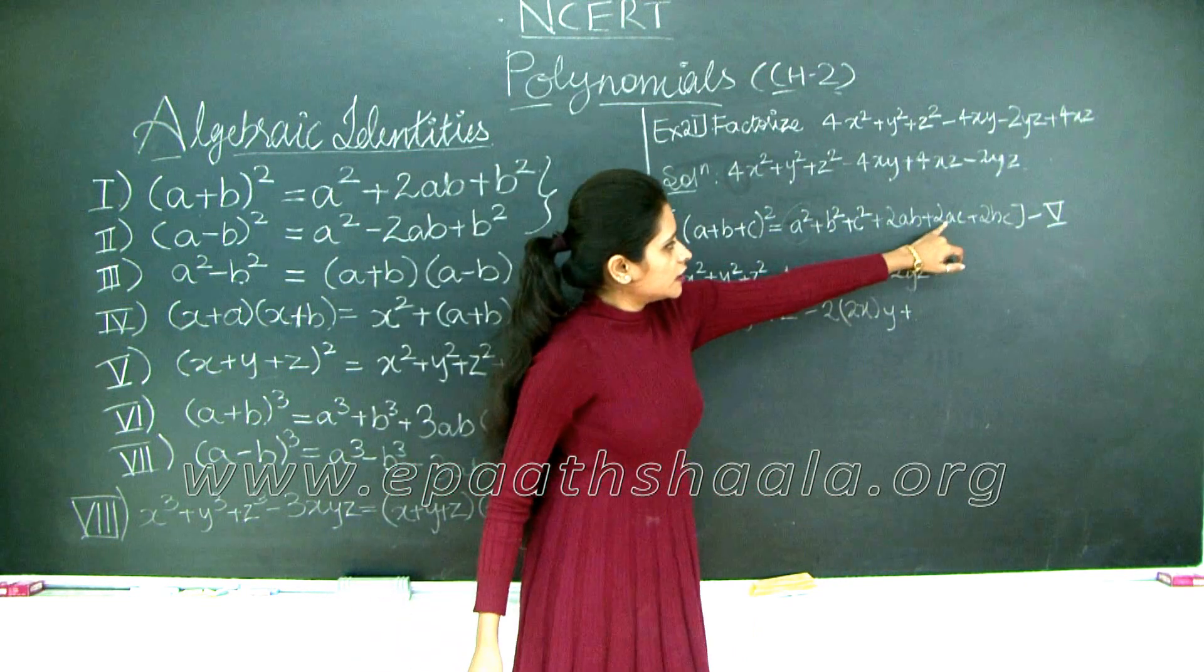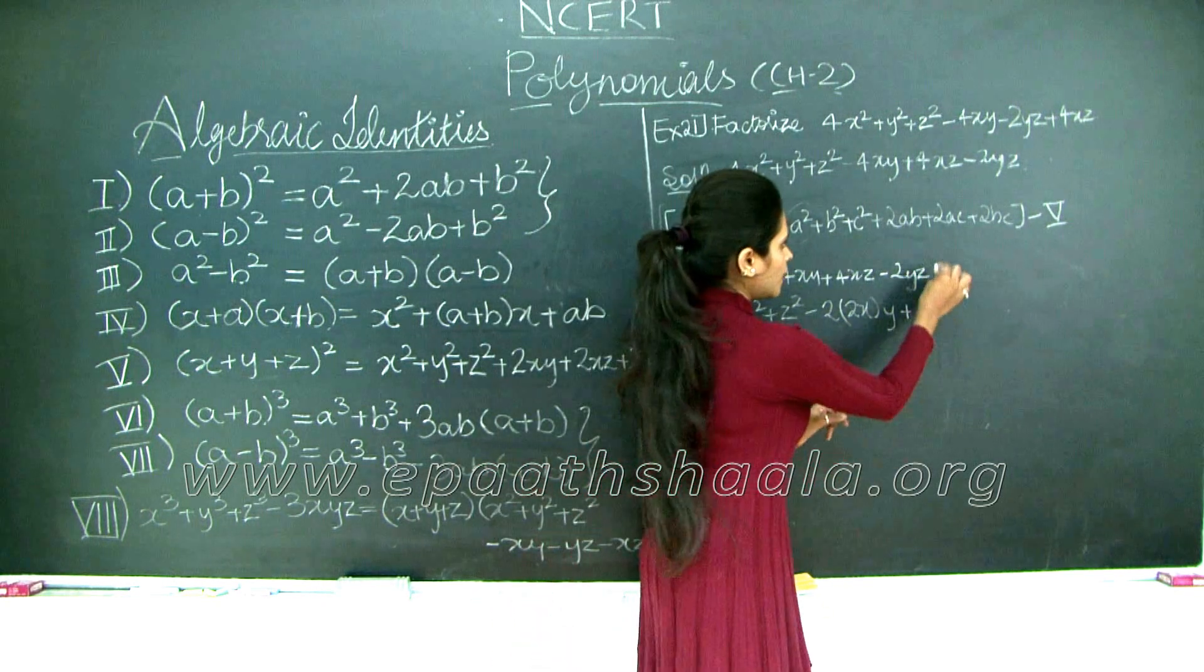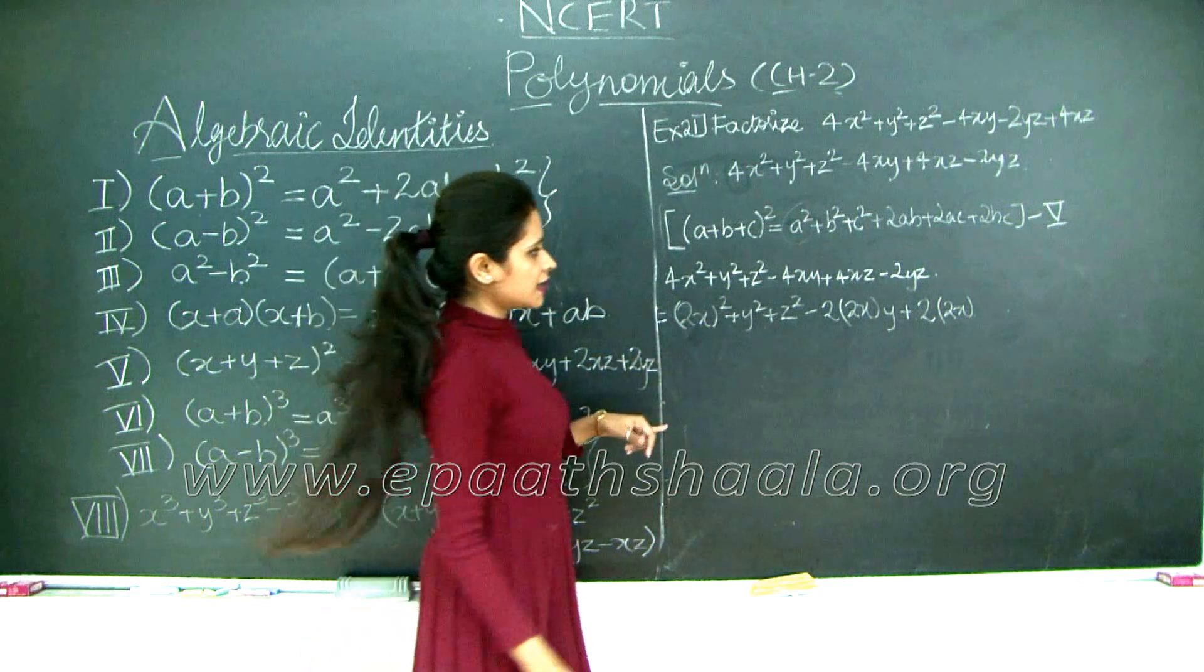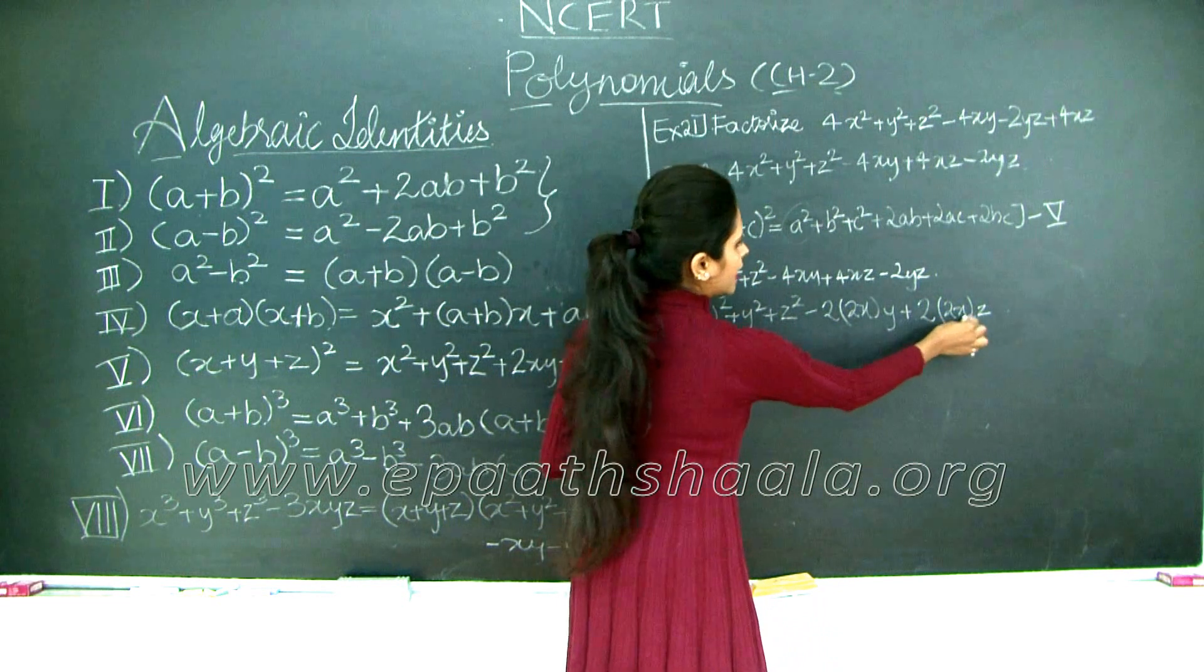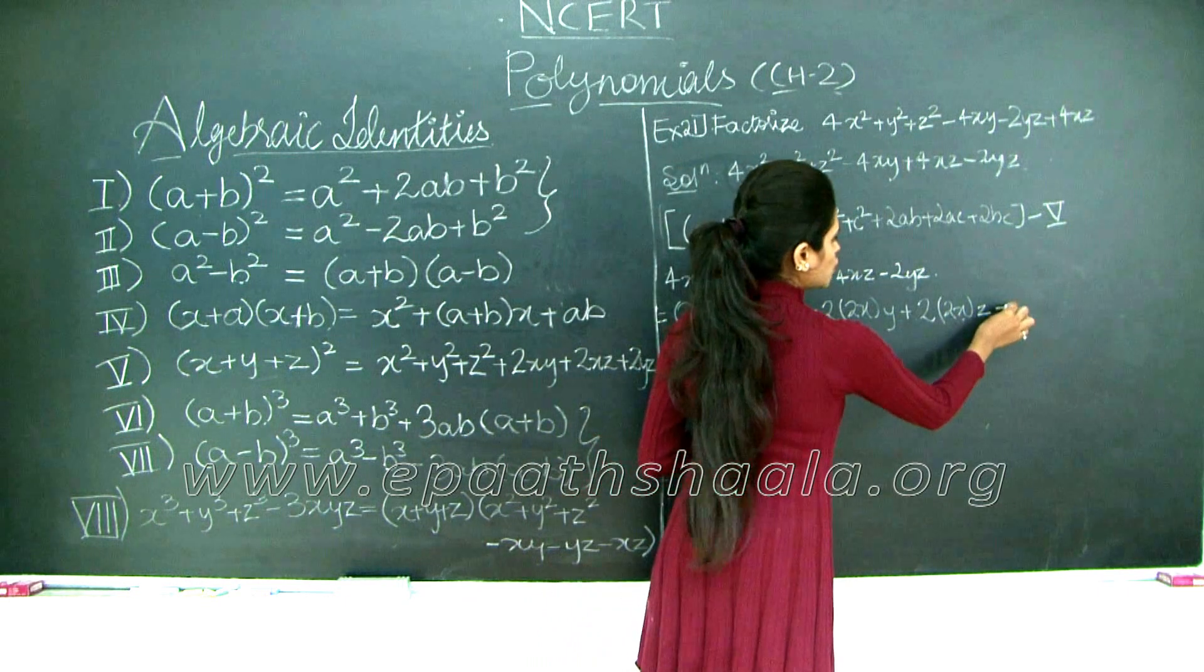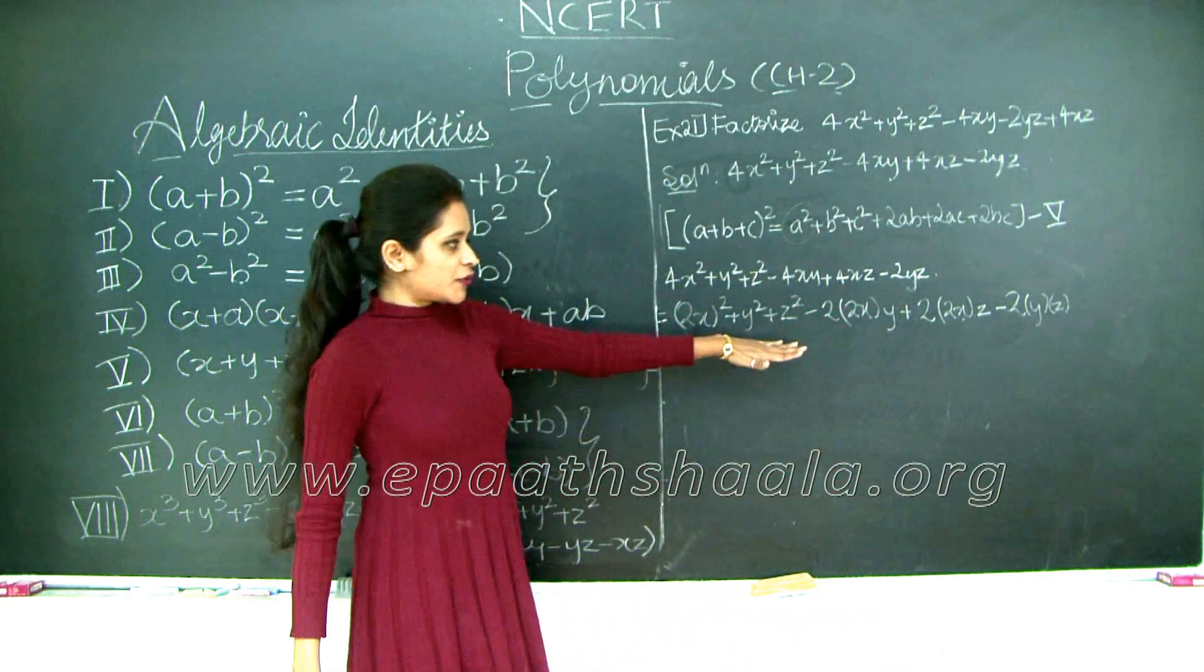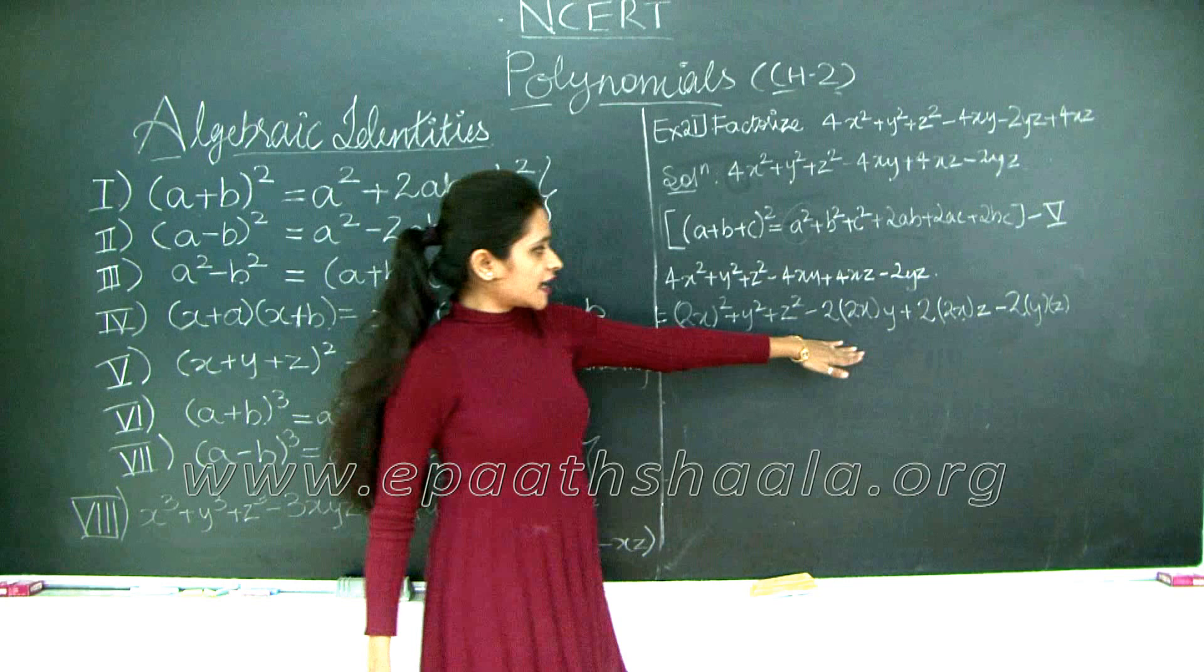Plus 4xz. Now again I need 2ac, so I have 2. My a is x, so 2x. Why 2x? Because my a is x and my x is 2x over here in this sum, and my z as is. So 2 into 2 for xz, which is what we need. Finally 2yz, so 2yz can be simply written as minus 2 into y into z. So we have expressed this sum in the form of our identity 5.